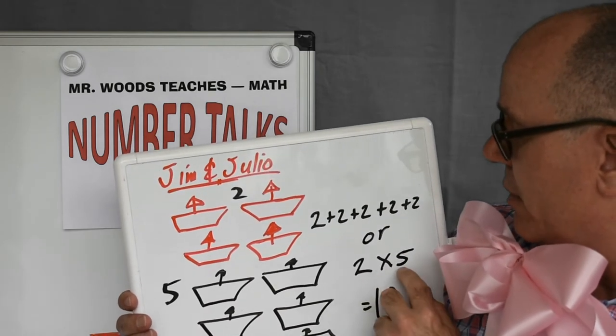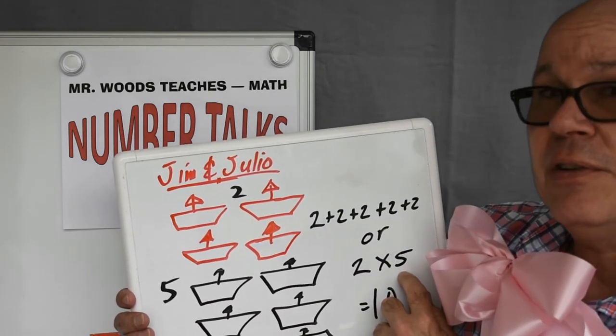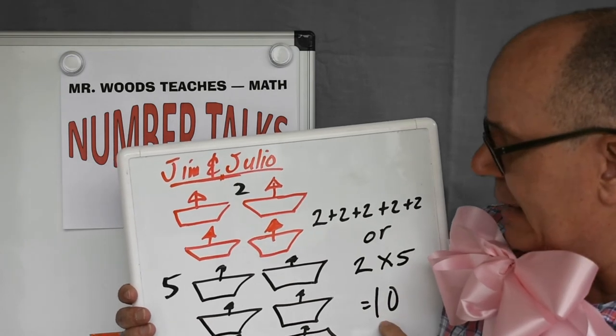Or multiply two times five, or five plus five, which is ten.